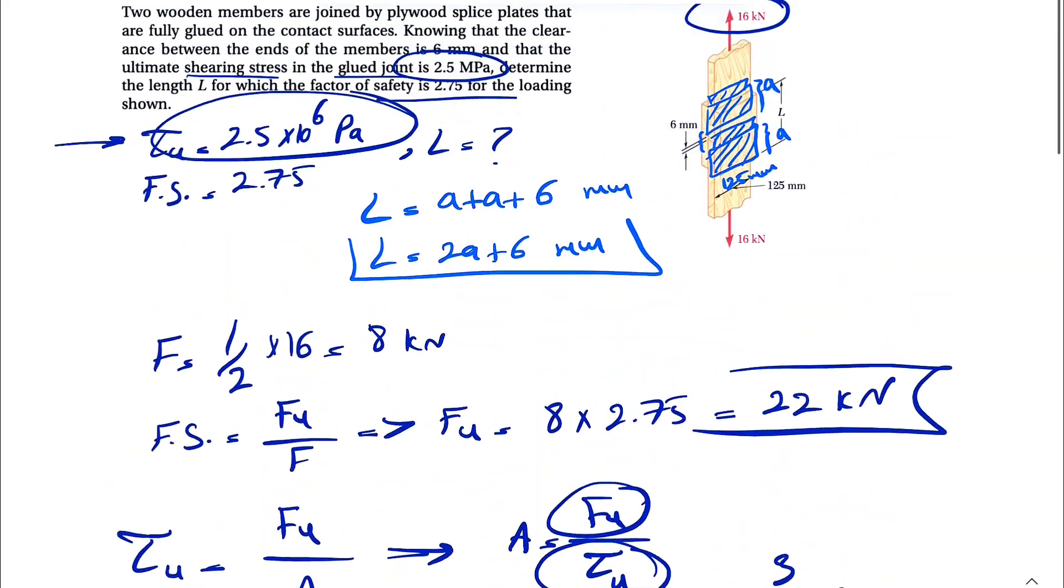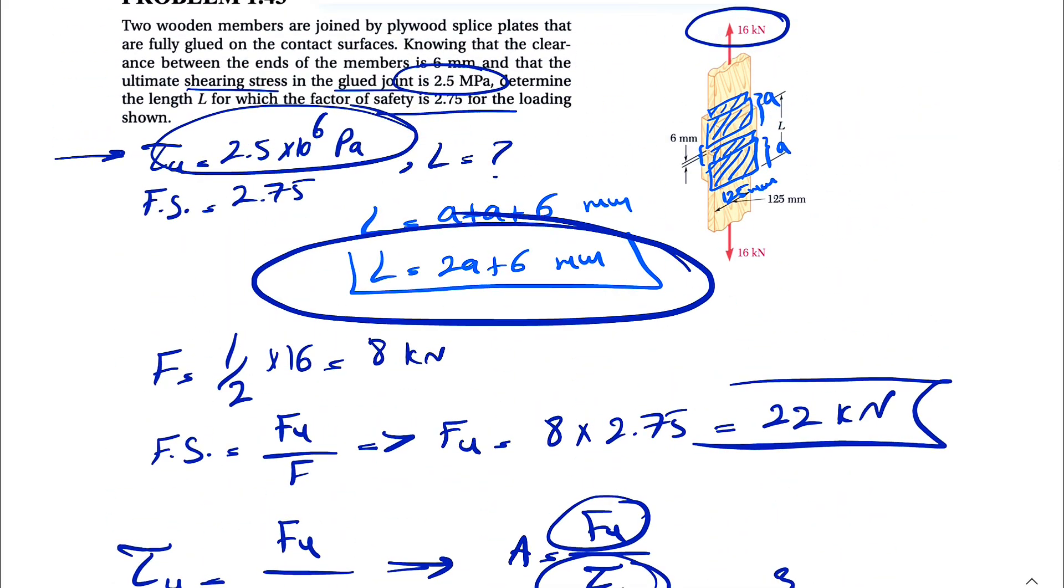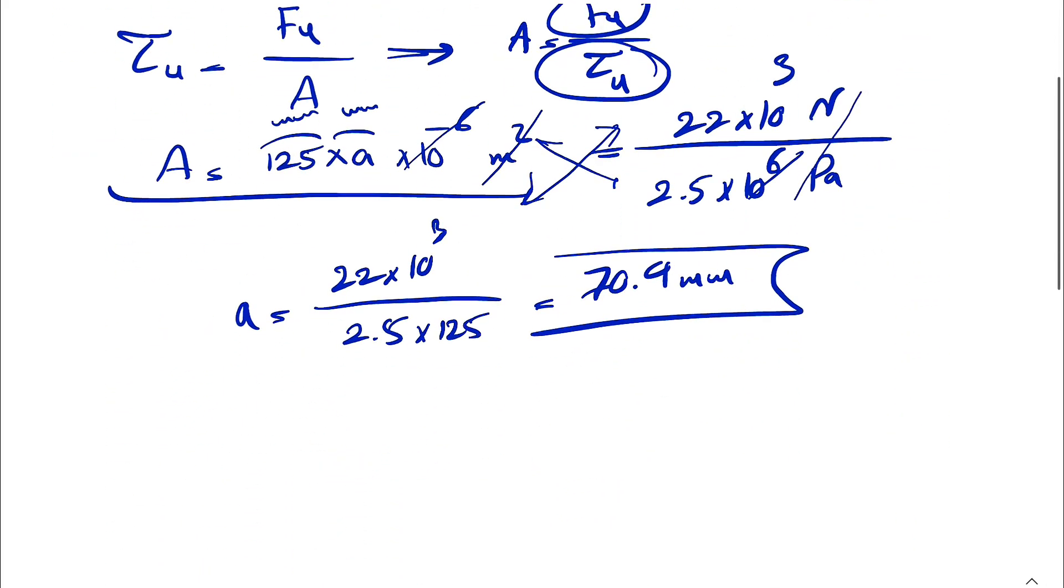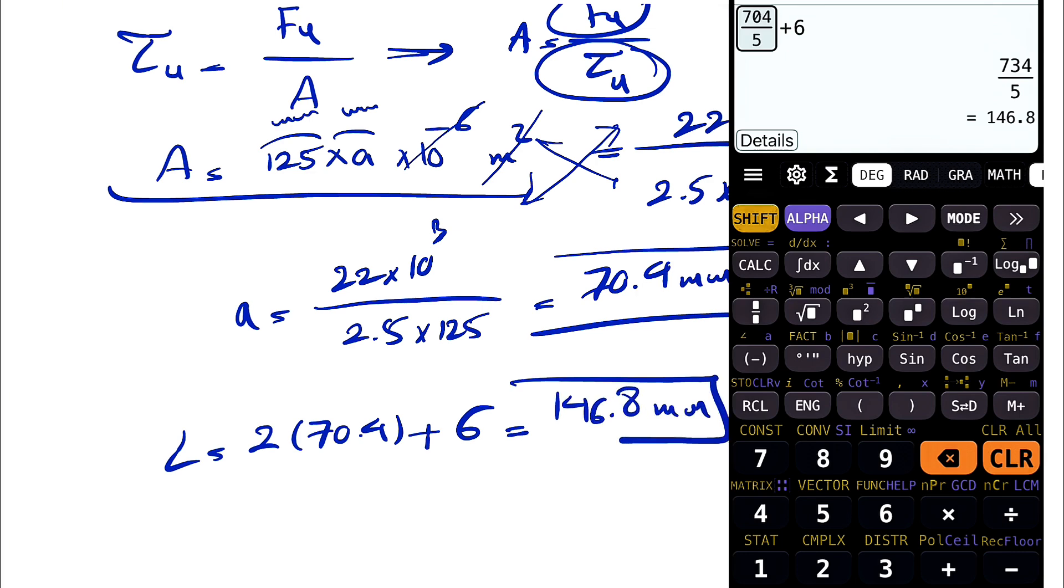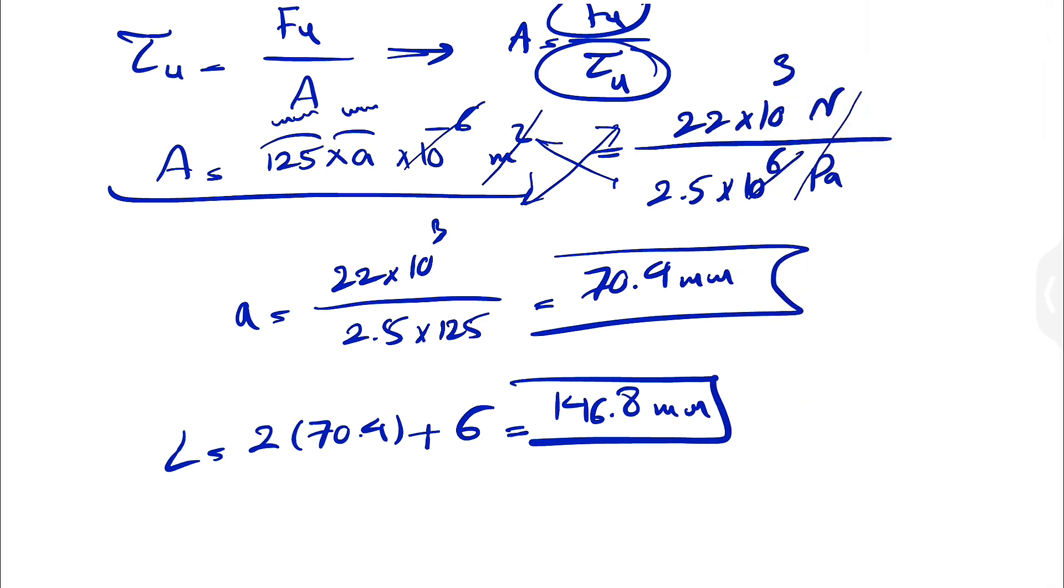But keep in mind, that's not the final answer. What we are looking for is L, which is what we found here. Our L would be 2 times A plus 6, and that's going to give us millimeters. So times 2 plus 6, and this is going to be 146.8 millimeters, and the length of what we are trying to figure out.